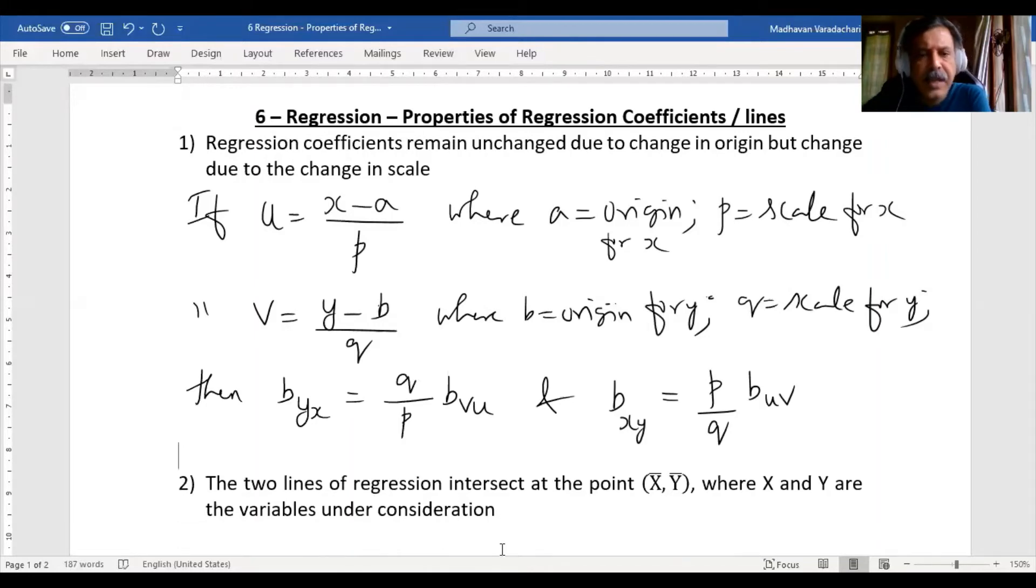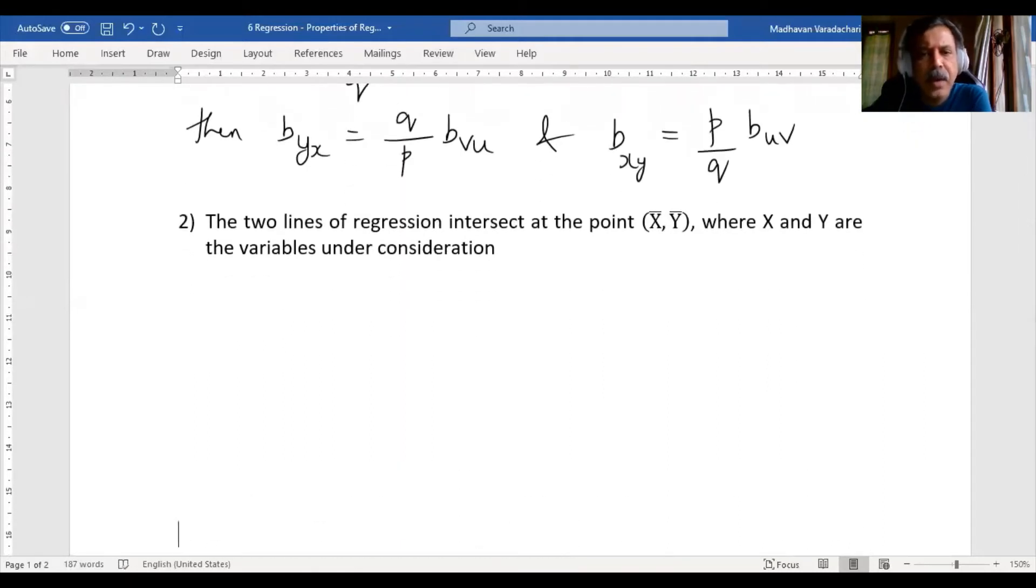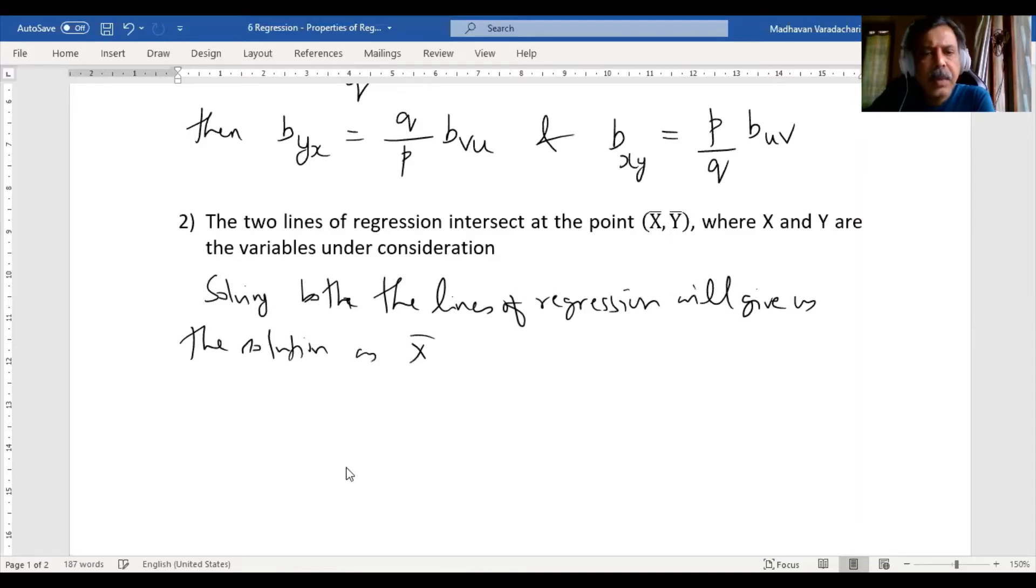So here, the two lines of regression intersect at the point (x̄, ȳ). What do you mean by this? It means that solving both the lines of regression will give us the solution as (x̄, ȳ). Another way of telling it is that if I draw these two lines on a graph, both the lines will intersect at the point (x̄, ȳ). So that is the second property.